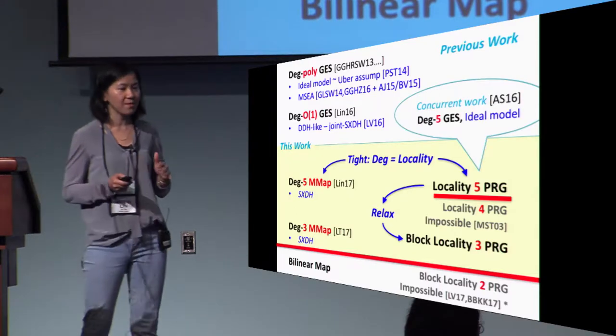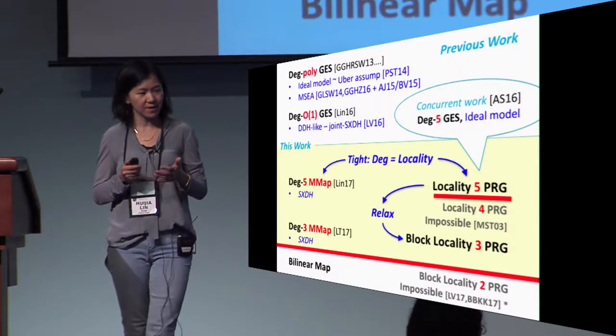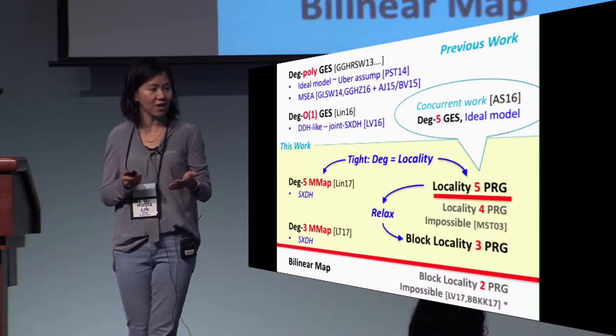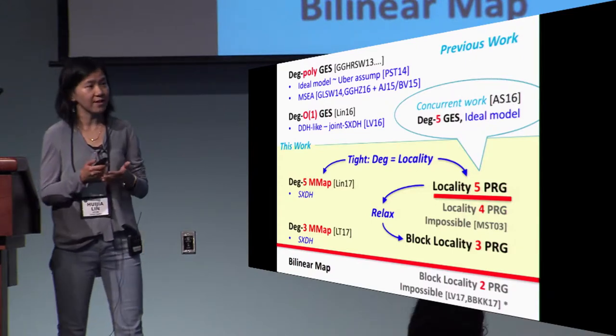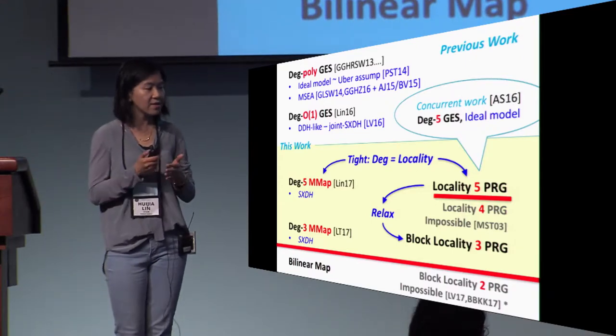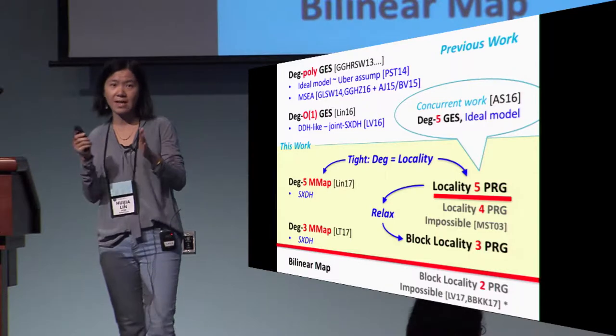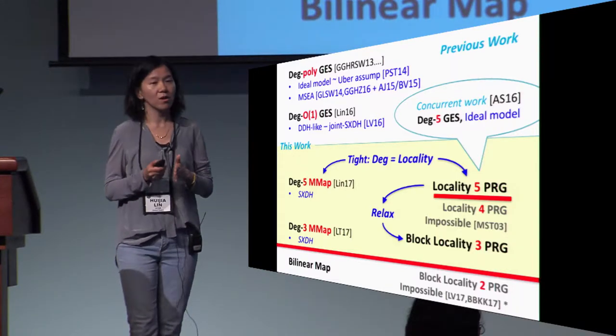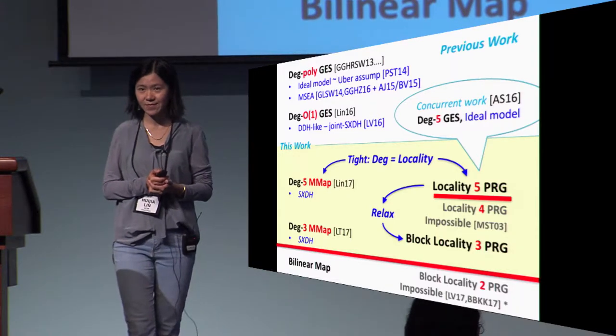Before I move on, I want to mention that the first paper is concurrent with the work of Nance and Sahai. They also construct IO from degree 5 graded encoding schemes. However, their security analysis is more or less in the ideal model, whereas we only rely on SXDH.